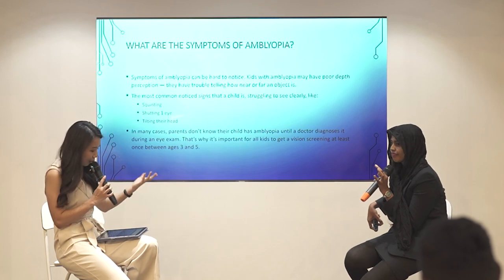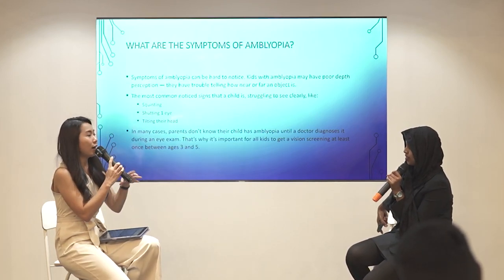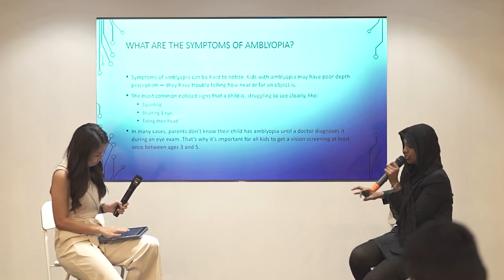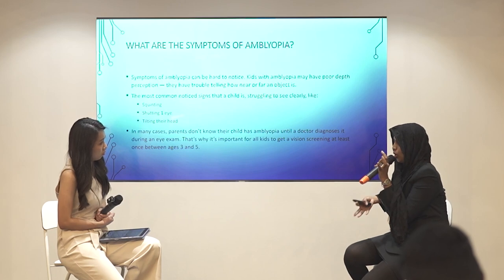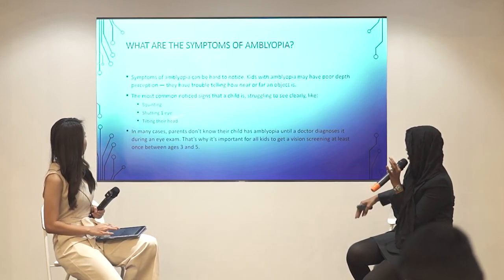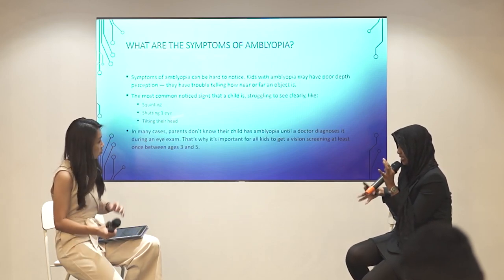For amblyopia, or lazy eye, the symptoms are usually hard for parents to notice. Children will tend to squint or shut one eye because they prefer getting information from the stronger eye. They may also tilt their head to see objects more clearly. If parents notice this, they should bring the child for an eye examination as soon as possible. The critical age is between 3 to 5 years — if treatment is started in that window, the prognosis is much better.